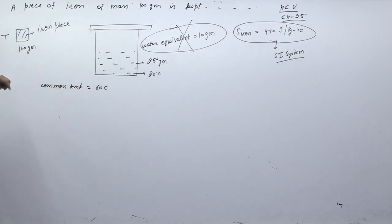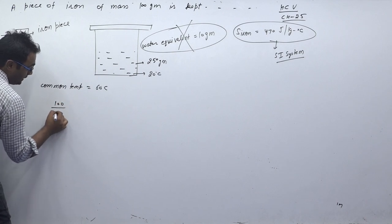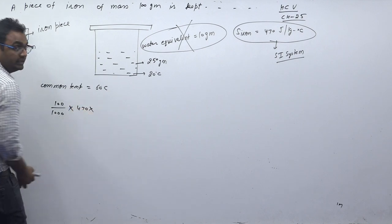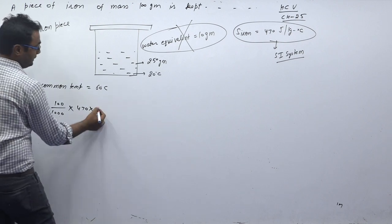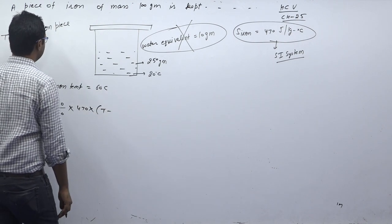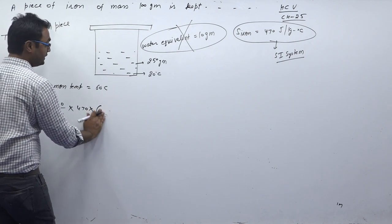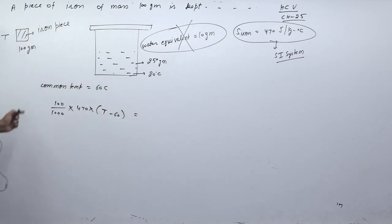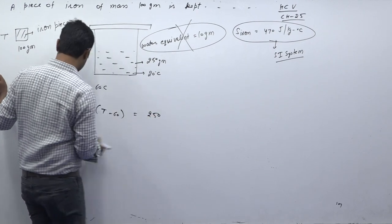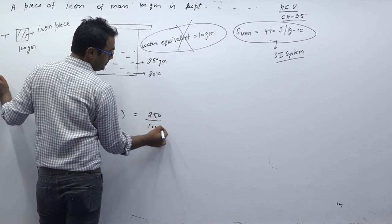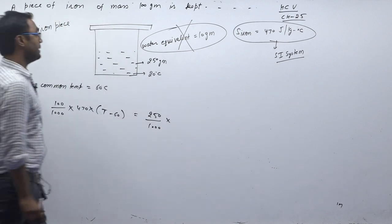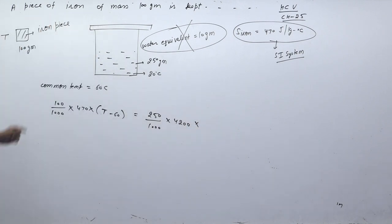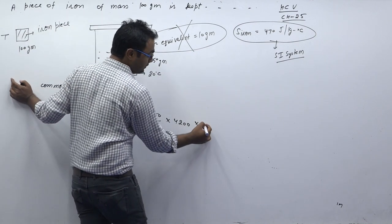Now let's calculate. Heat lost by iron: mass is 100 grams (0.1 kg), specific heat capacity is 470 J/kg/°C, and delta T is (T − 60). For the heat gained: the effective water mass is 250 grams (0.25 kg), specific heat of water is 4200 J/kg/°C, and temperature change is from 20 to 60, which is 40 degrees. So heat gained = 0.25 × 4200 × 40 = 42,000 J.